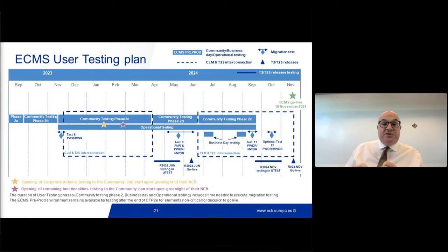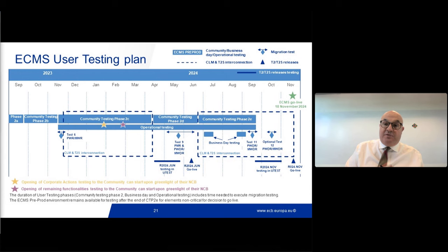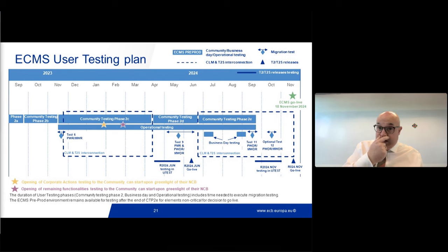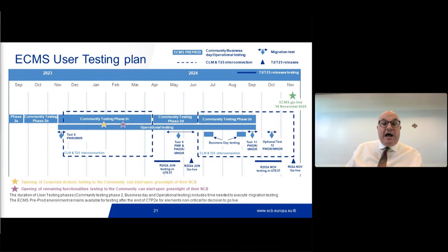Bamini will go through what is currently available for testing, what will be opened at end of January, what will be opened end of February, and she will go through the restrictions. But this is only at a high level — you will need to go back onto the ECB site and look at the constantly updated Testing Conditions document. Another very important point: the non-repudiation of origin — the Assertio GoSign Desktop — we are currently testing it internally and will let you know the date we plan to open it up.